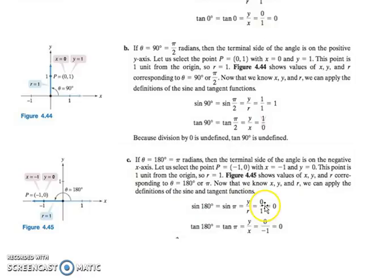Sine is your 0. 0 over 1 is fine. We can have 0 on the top. We just can't have it on the bottom, like up here. And then tangent is y over x, which is 0 over negative 1, which is still 0.